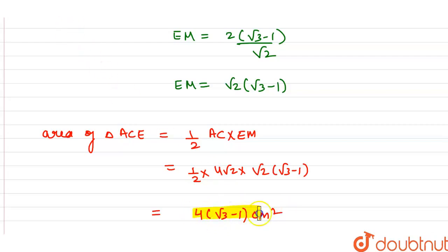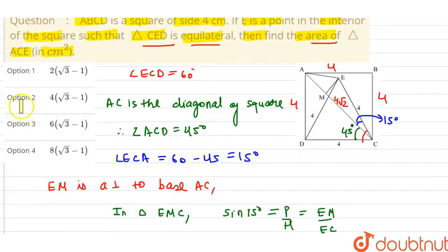This is the area of triangle ACE. So let's see, which option is correct? Option number 2: 4(√3 - 1) is the answer. Thank you, friends.